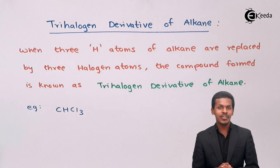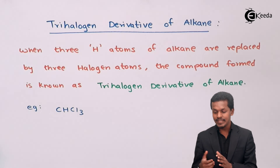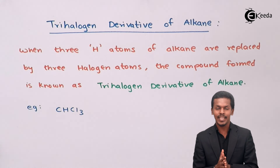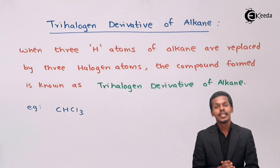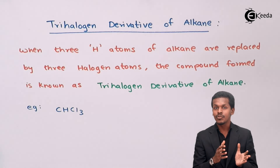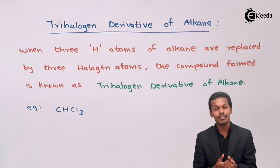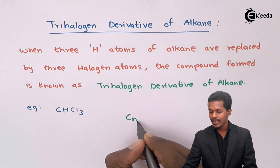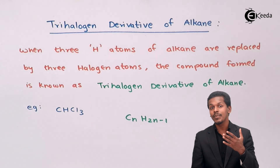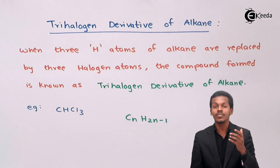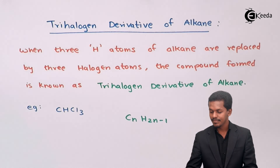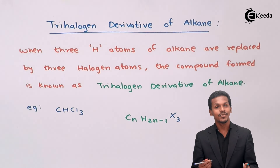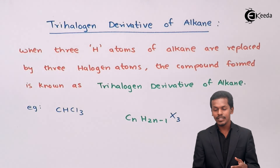The general formula for the trihalogen derivative of alkane: starting from CₙH₂ₙ₊₂ for the alkane, we replace three hydrogen atoms with three halogen atoms. So the formula becomes CₙH₂ₙ₋₁X₃. The plus 2 is reduced by 3 (one step at a time), giving us 2n minus 1, and we have three halogen atoms X₃.